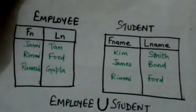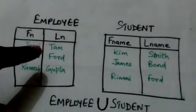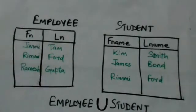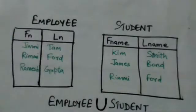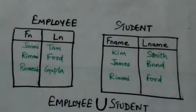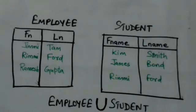For example, this is the employee relation and this is the student relation. Both relations have the same number of attributes, that is two. The domain of the first attribute of the employee relation is the same as the domain of the first attribute of the student relation, and similarly for the second attributes. So we can apply the union operation on them.